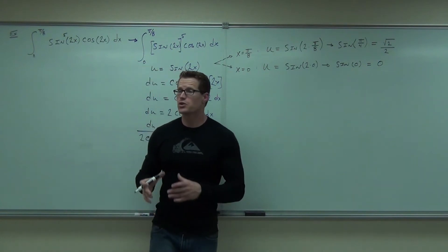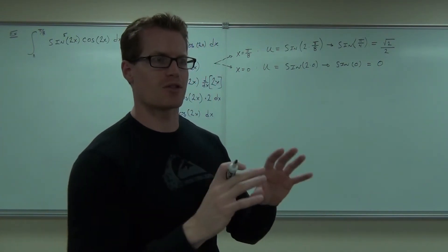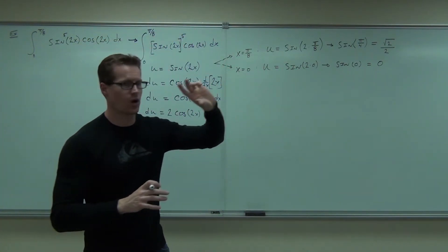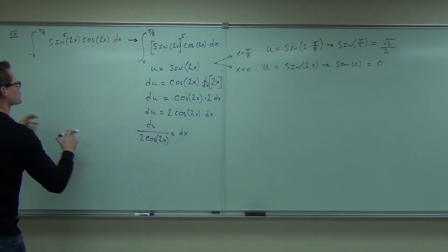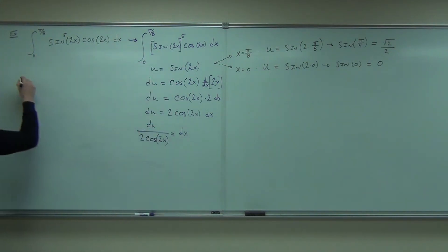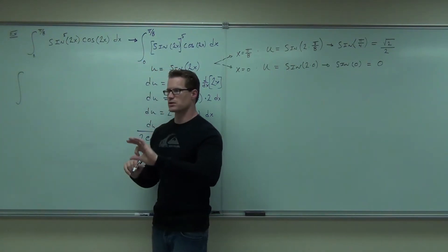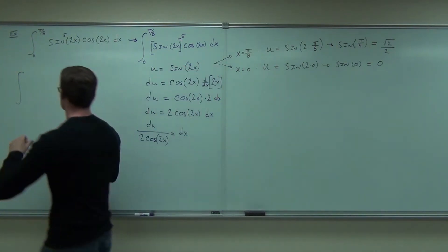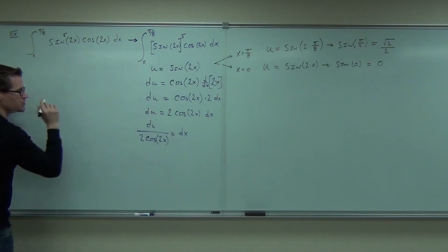So now you know the new bounds. Let's do the substitution — let's do it correctly. We'll substitute for dx, we'll substitute for the sine of 2x, and we'll also substitute for the bounds. The integral now goes from 0 to root 2 over 2, because we're expressing everything in terms of u.